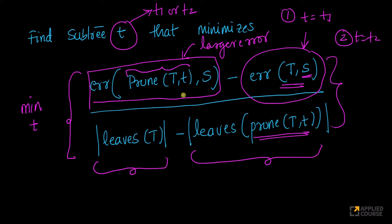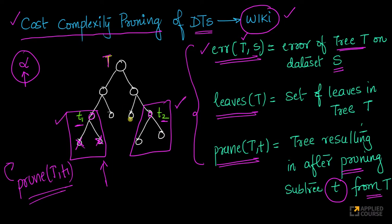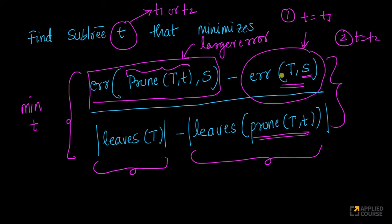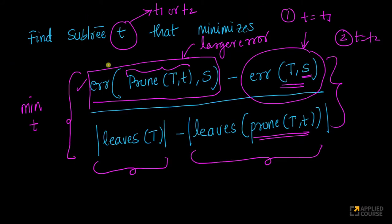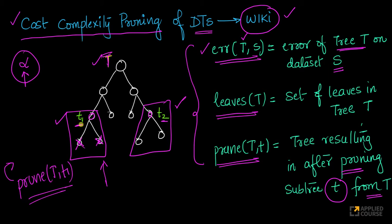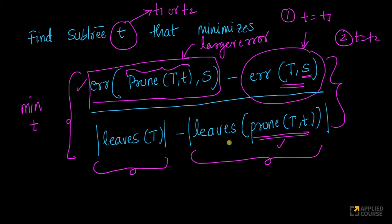So, what are you trying to do here? You are saying, I want to pick that subtree, either t1 or t2, that will result in a good reduction of error. Look at this, you're trying to minimize this. You want your pruned tree to be as good as the original fully grown tree. So, that's why you are minimizing the numerator, but you're maximizing the denominator, which means you'll find that tree which will result in fewer leaves, but same error as the original full tree.